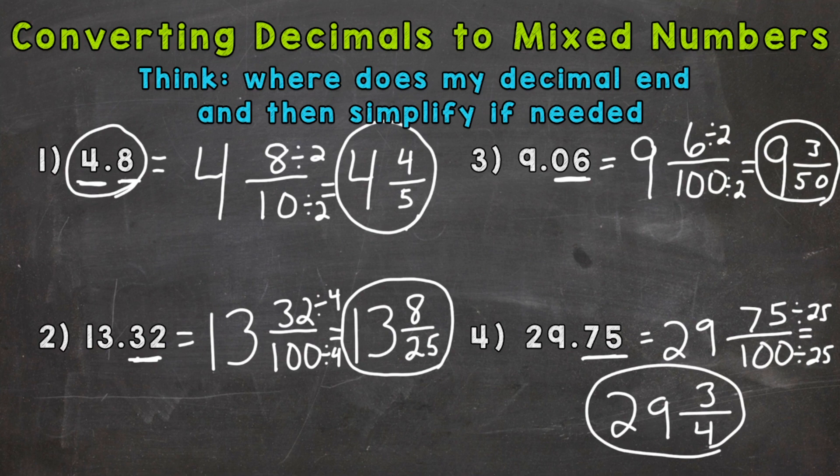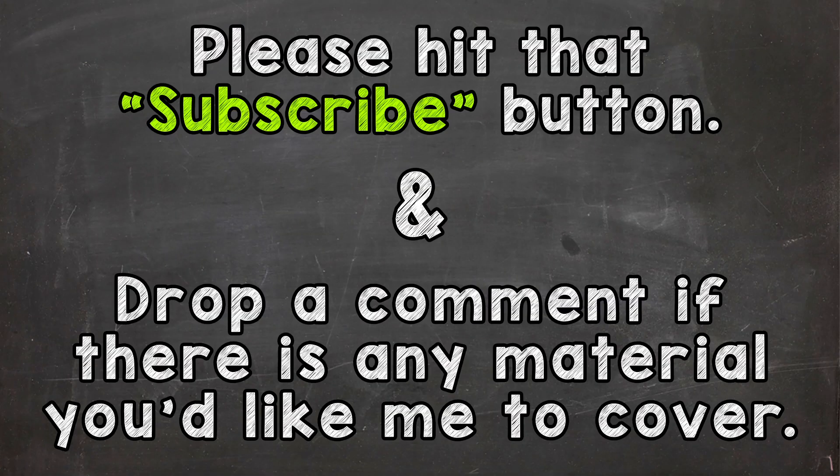So there you have it. There's how you convert a decimal to a mixed number. Hopefully that helped. Thanks so much for watching. Until next time.